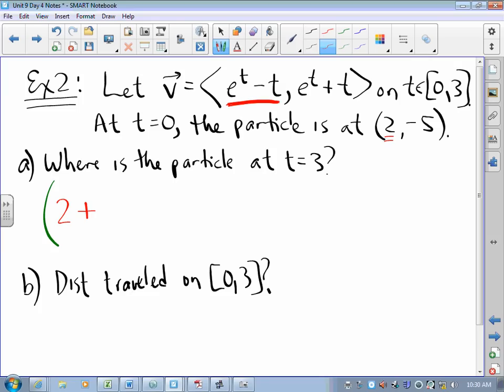So, I've got to back up that from velocity to position. I need an integral from 0 to 3 of e to the t minus t dt.